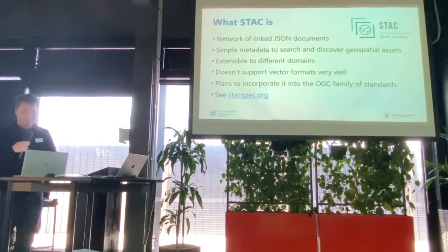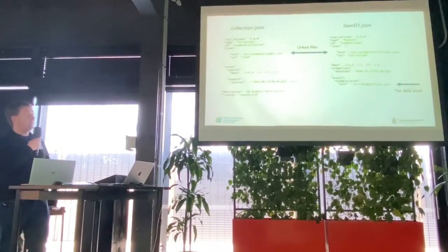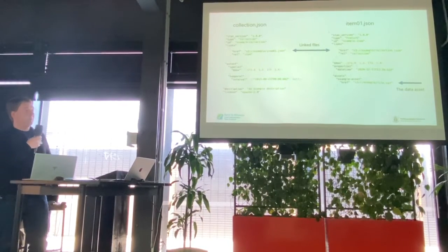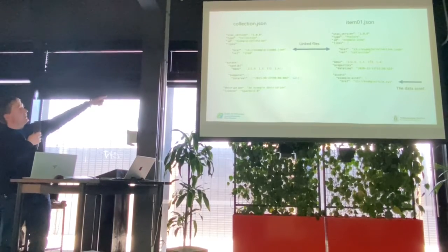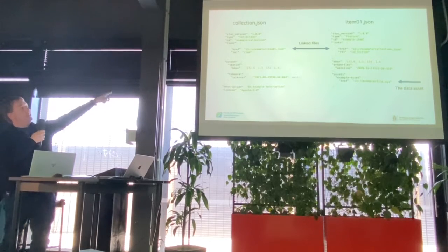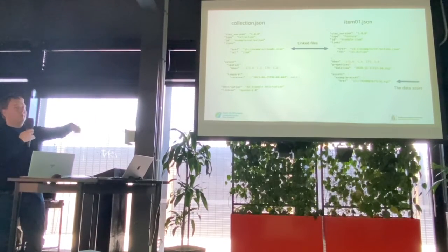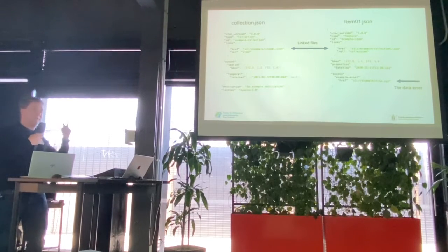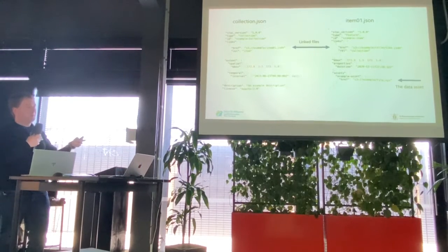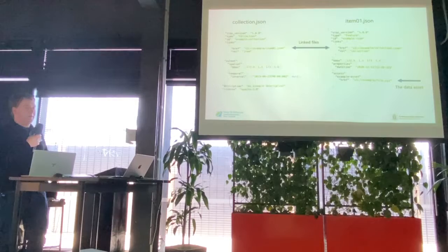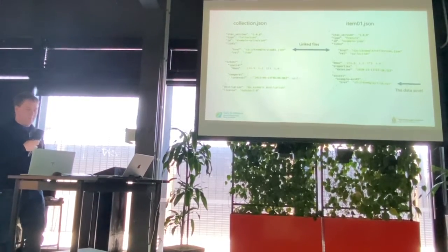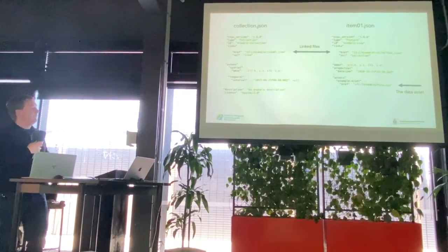The actual data looks a bit like this. The collection is typically the top level of your dataset, which has a set of links — in this case just one — down to an item. The item has a link back to the collection. There are also parent links, child links, and root links, so it's quite easy to navigate inside your dataset and go up and down the hierarchy.